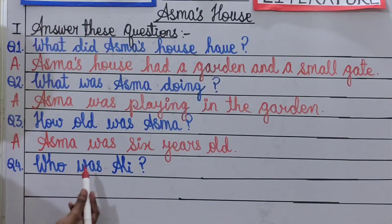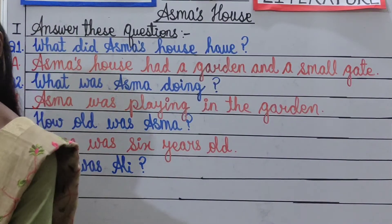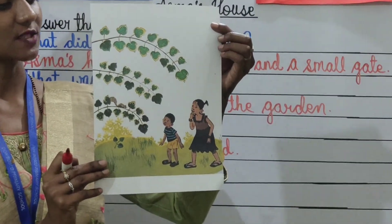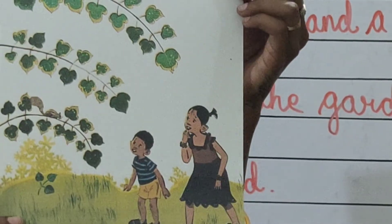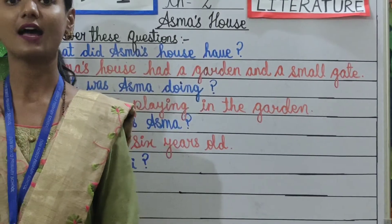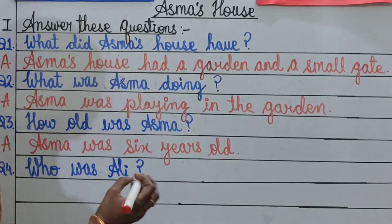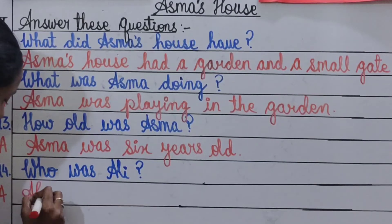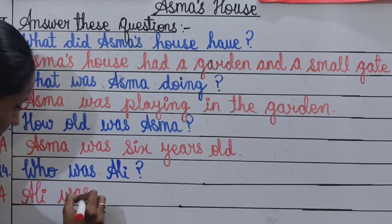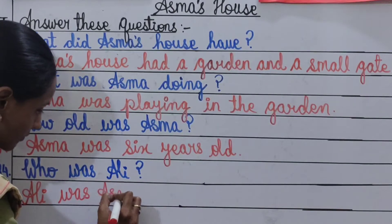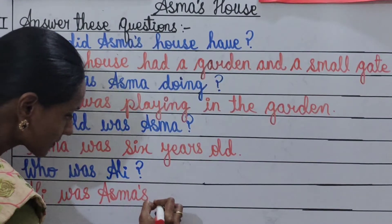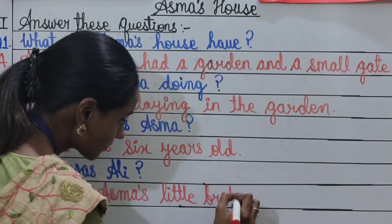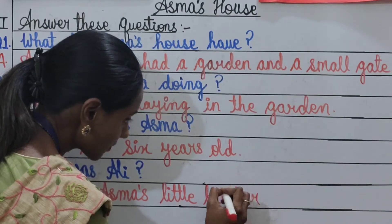Now, who was Ali? Look at this picture children. What do you see in this picture? There is Asma and there is a little boy. Who is that little boy? He is Ali. So Ali was Asma's little brother. Answer: Ali was Asma's little brother.